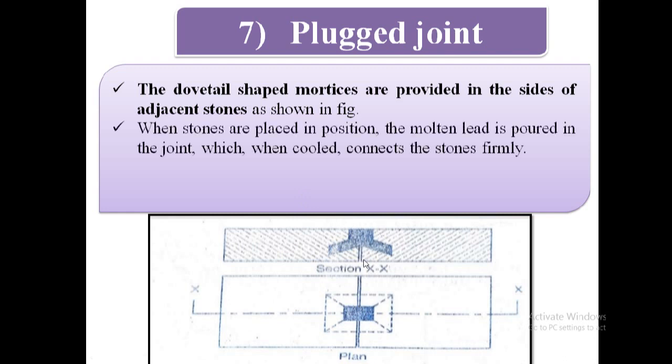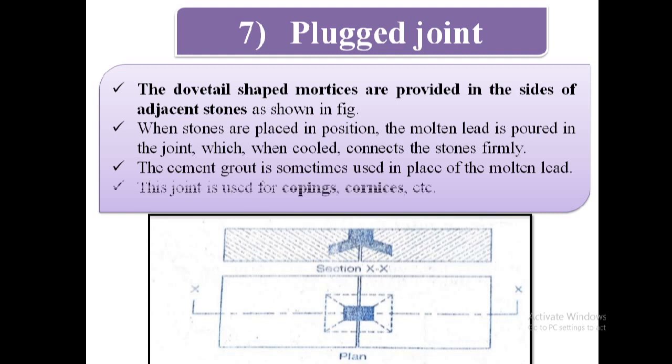When stones are placed in position, the molten lead is poured in the joint which when cooled connects the stones firmly. The cement grout is sometimes used in the place of the molten lead. The joint is used for coppings, cornices, etc.